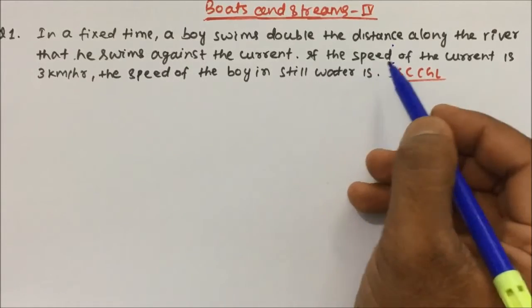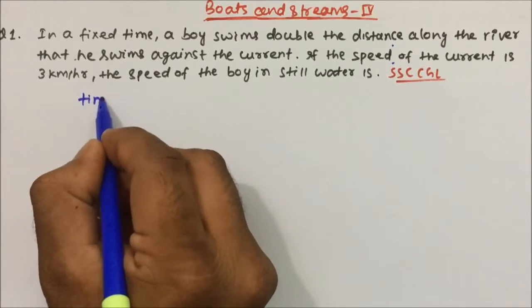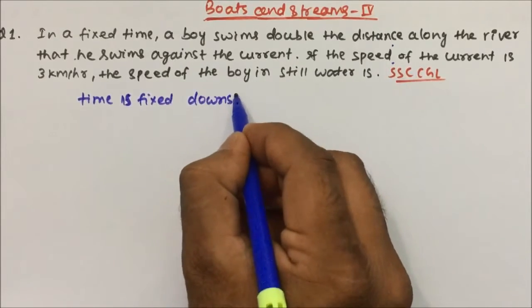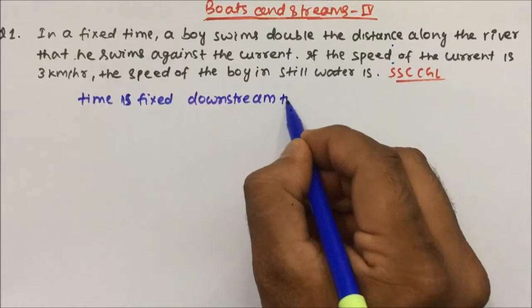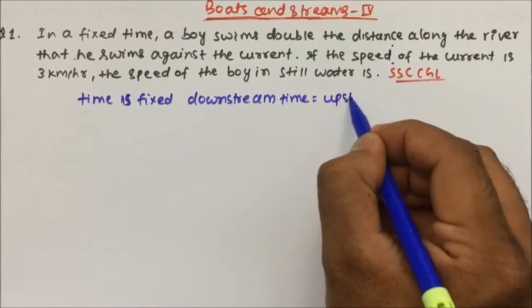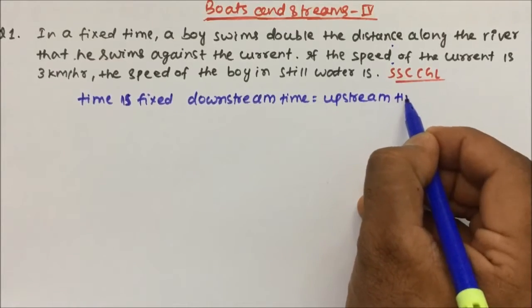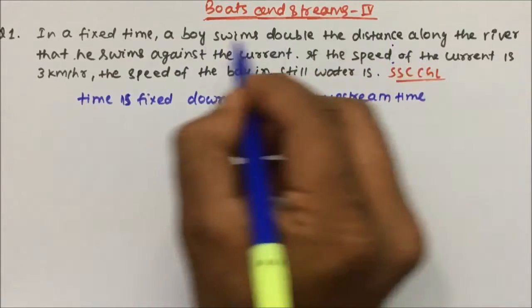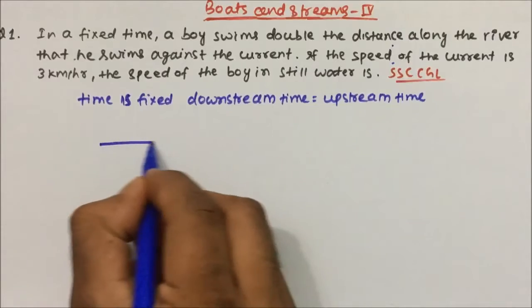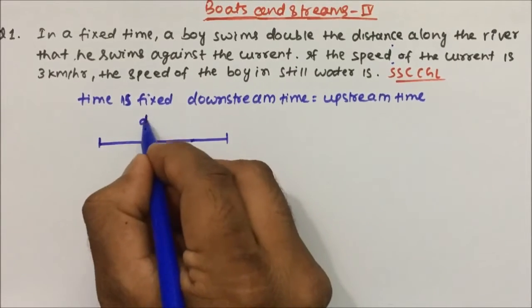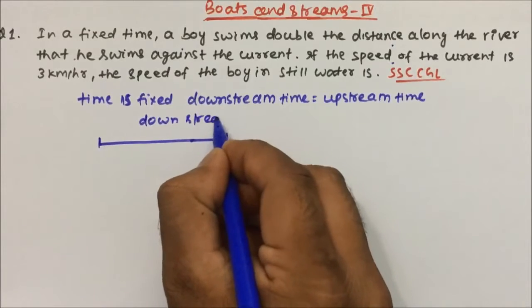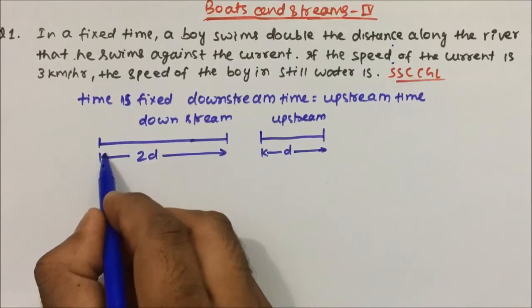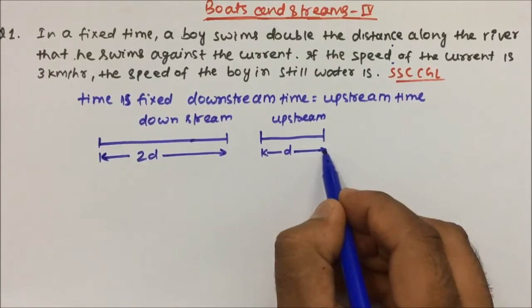Let's write the given data. In a fixed time, downstream time equals upstream time — they are the same. The boy swims double the distance along the river, i.e., downstream, compared to against the river, i.e., upstream. So downstream distance is 2d and upstream distance is d.